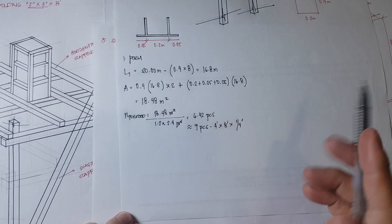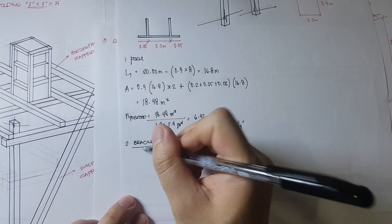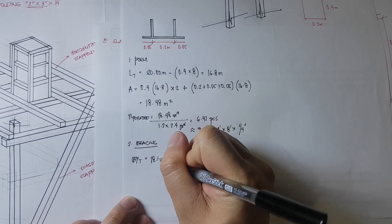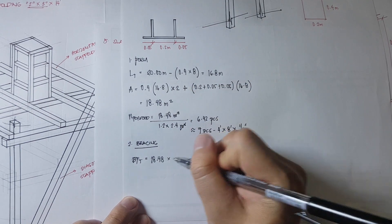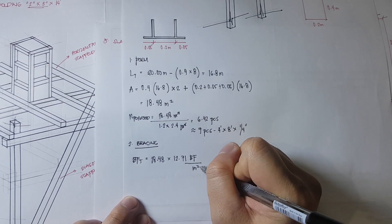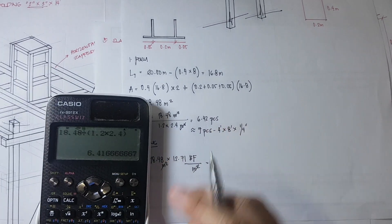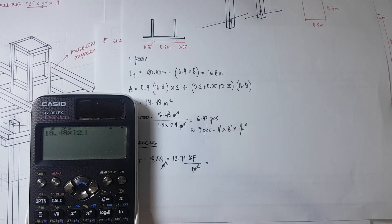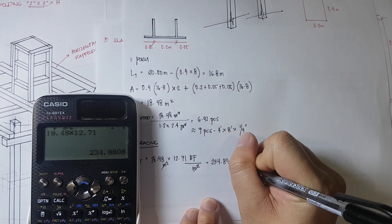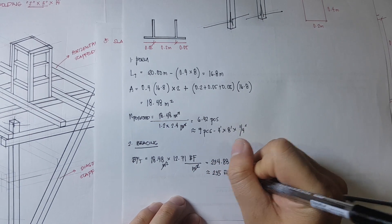After the forms, we now estimate the quantity for the bracing. The total board foot is equivalent to the area of 18.48 times the factor of 12.71 board feet per square meter. So 18.48 times 12.71 equals 234.88, which rounds up to 235 board feet.